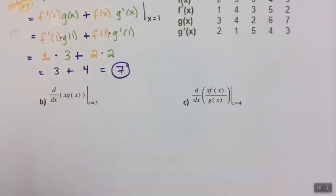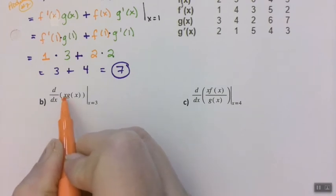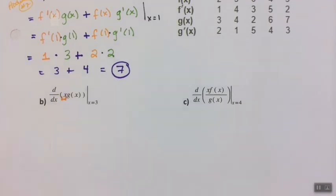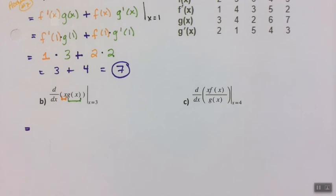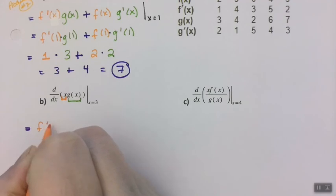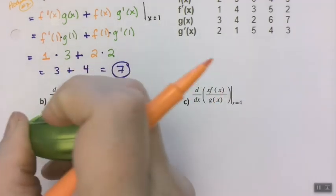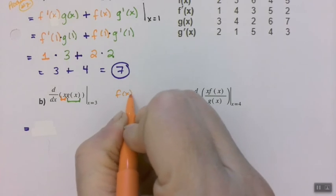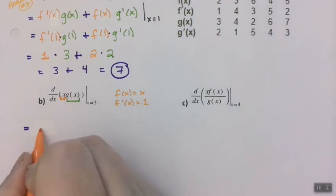Let's do the same thing down here, but here your f function is even easier — it's just x. See right there? That's one function, and here's the other function. And this time I want it at 3. I'm going to skip the middle step and jump right to it. If f of x is x, then f prime of x is equal to 1, no matter what. So the derivative of that is just 1.